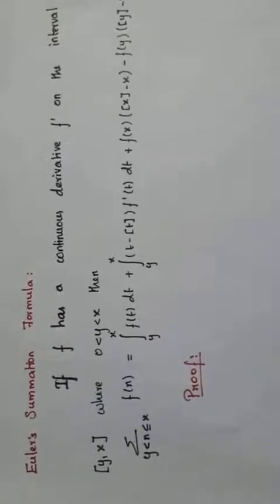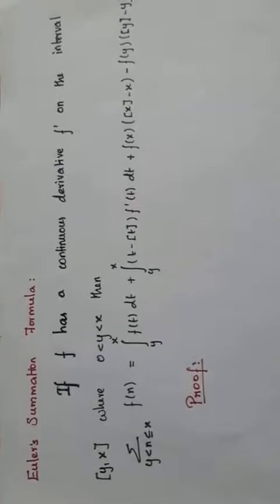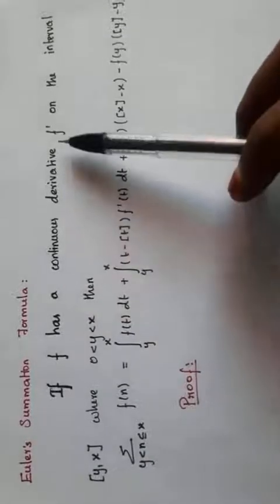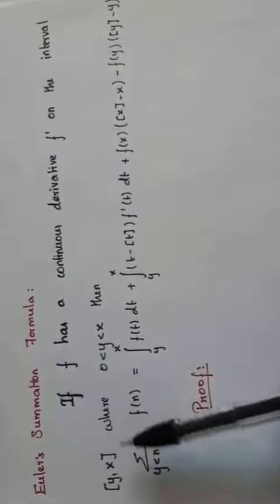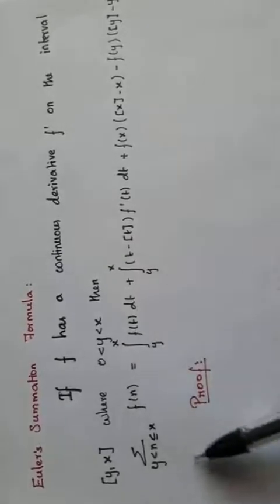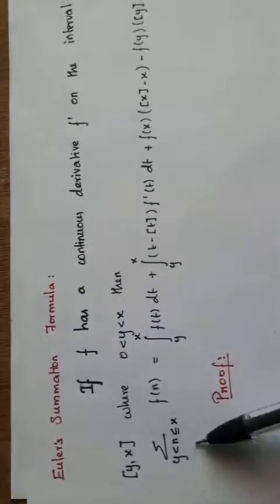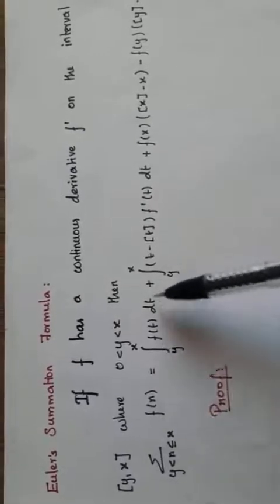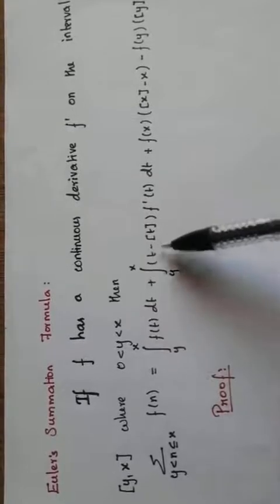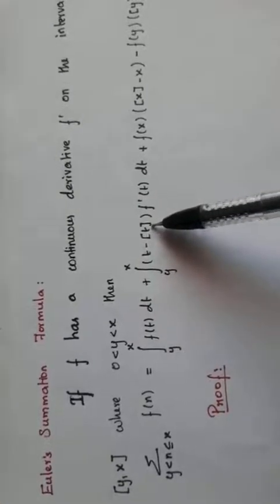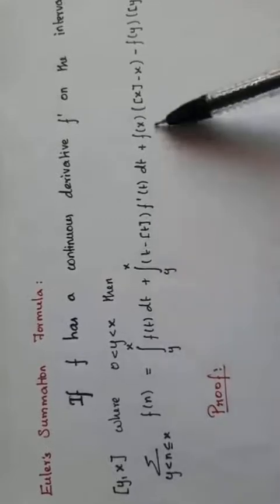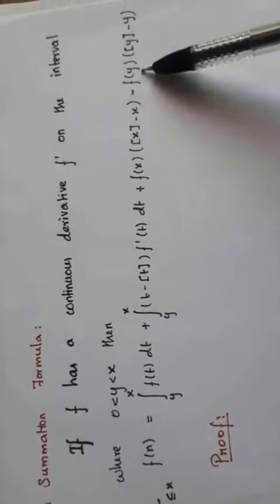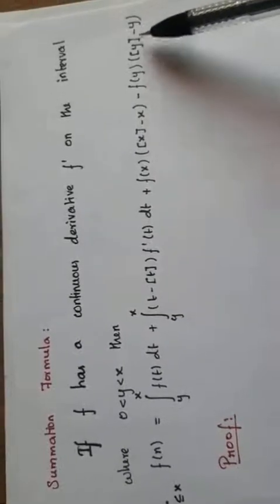In this video I am going to teach you the Euler summation formula. If f has a continuous derivative f' on the closed interval [y, x] where 0 < y < x, then the sum over y < n ≤ x of f(n) equals the integral from y to x of f(t) dt, plus the integral from y to x of (t - ⌊t⌋) f'(t) dt, plus f(x)·⌊x⌋ - x minus f(y)·(⌊y⌋ - y).